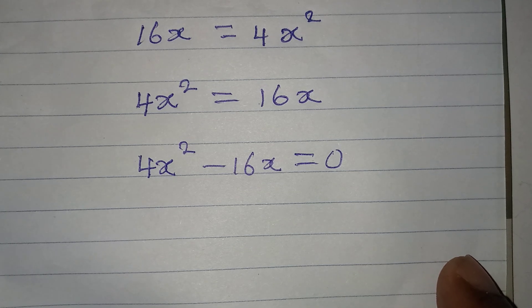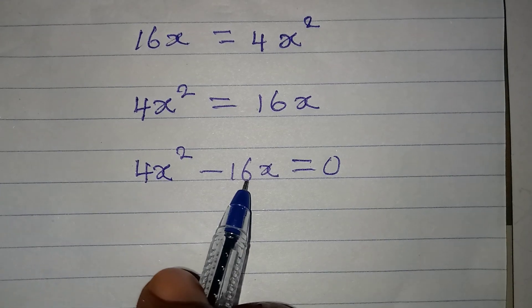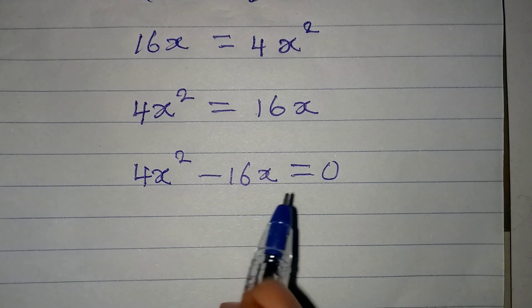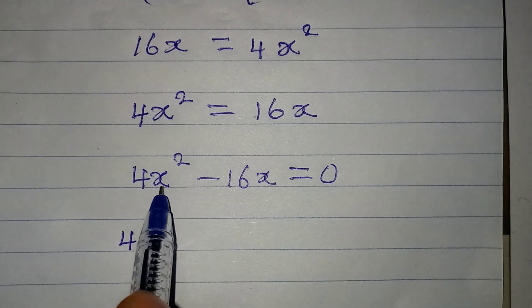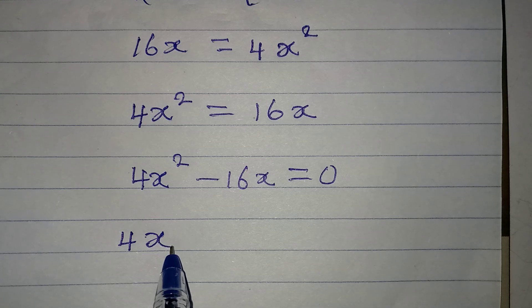4 is here and 4 can be found in 16, right? So, that means I can bring out the 4. x is here and x is over there. So, bring x out as a common factor.